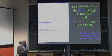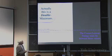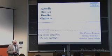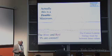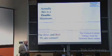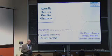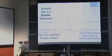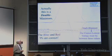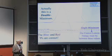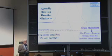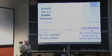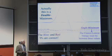Now the problem is that this isn't Hooke's Law, because I didn't show you the whole picture. It's in fact the double minimum. And those are both true solutions. So the correct single minimum energy would lie between those two, but for the double minimum there's a solution that's lower in energy and a solution that's higher in energy.